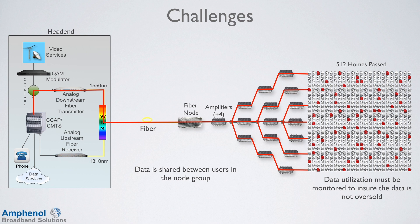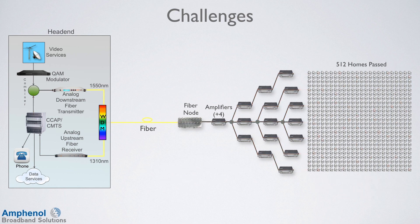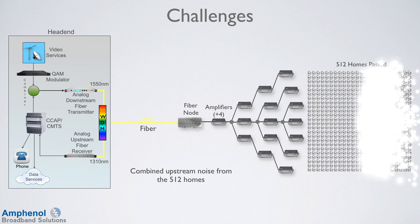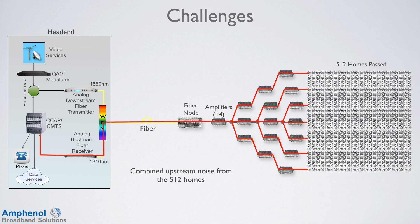With DOCSIS 3.1, many systems are offering 1 Gbps services, and customers are always conducting speed tests to verify that they're receiving the data they're paying for. Another drawback of this architecture is the noise generated by the analog fiber links and the amplifier cascades. To achieve higher data rates set by the DOCSIS 3.1 standard, higher-order modulations can be used, such as 512 QAM up to 4096 QAM. For these higher-order modulations to work, the signal-to-noise of the system must be reduced. Also, the combined noise in the upstream from each of the 500 homes in the node generates a large portion of the upstream noise in the system.